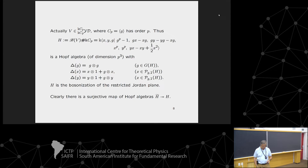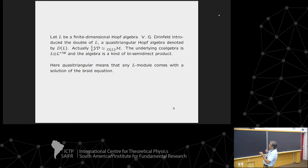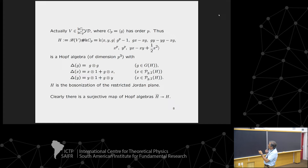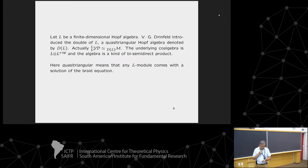As before, we can realize V as a Yetter-Drinfeld module over the cyclic group C_p, and form the bosonization of the restricted Jordan plane with the cyclic group. We obtain a surjective Hopf algebra map from H̃ to H. We are interested in the Drinfeld double. Suppose L is a finite-dimensional Hopf algebra. Then Vladimir Drinfeld introduced the double of L: a new finite-dimensional Hopf algebra which, as a vector space and coalgebra, is L ⊗ L^{op,∗}. The algebra structure is a kind of semi-direct product in both directions.